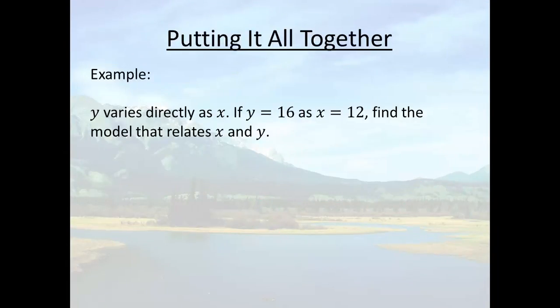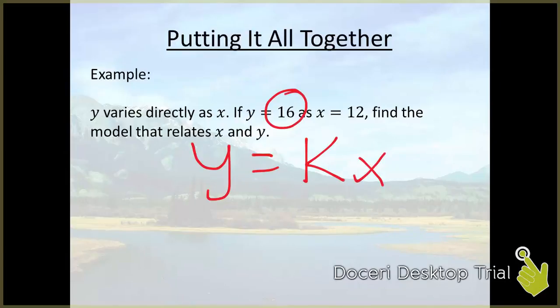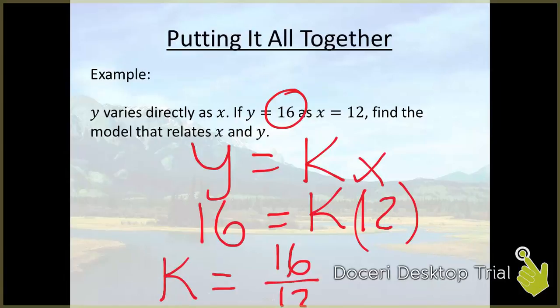All right, so we set it up like this. If y is equal to kx, well, that means 16 is equal to k times 12, which means that k is 16 over 12, which reduces to 4 thirds.